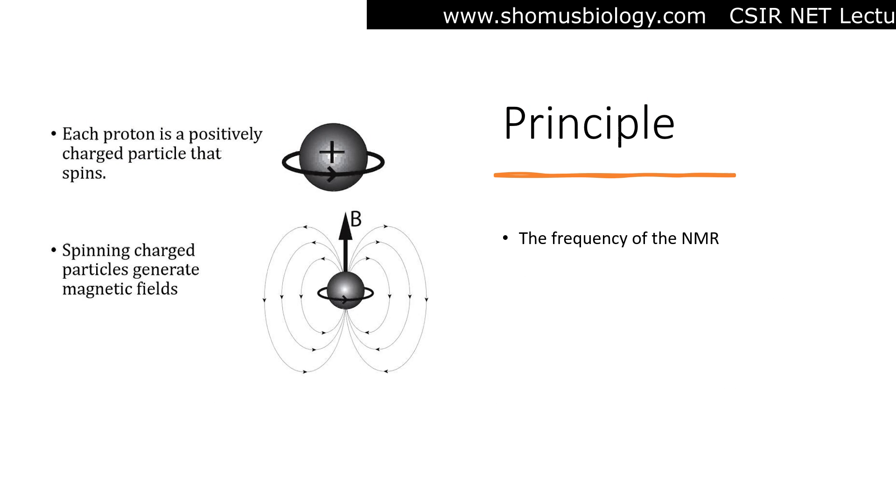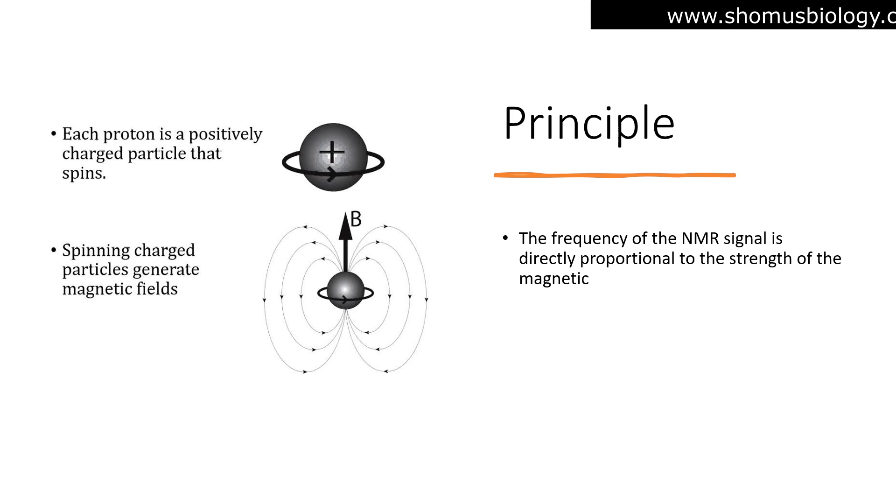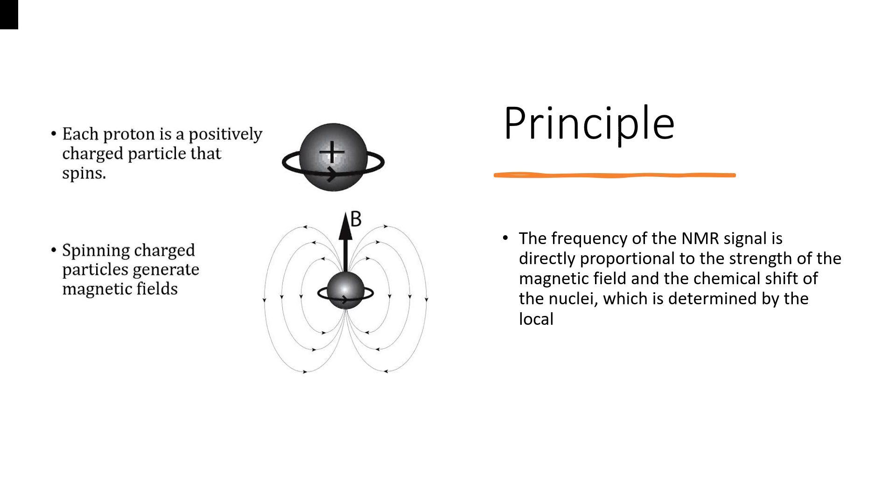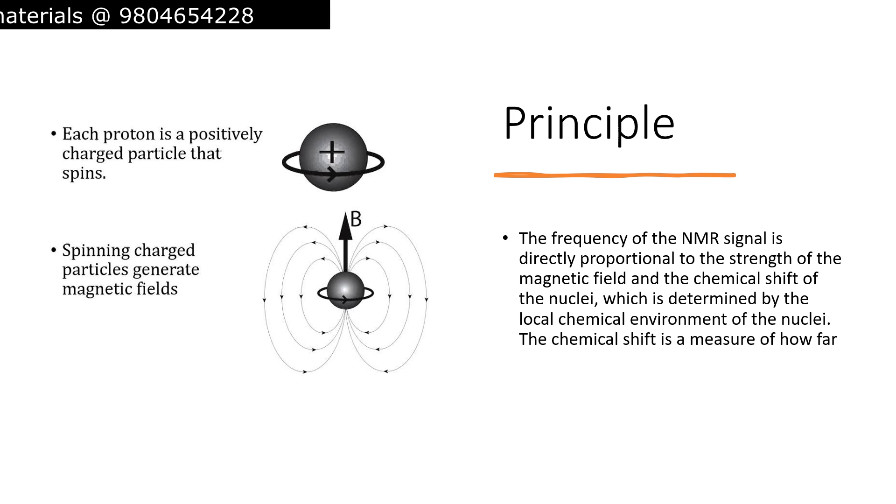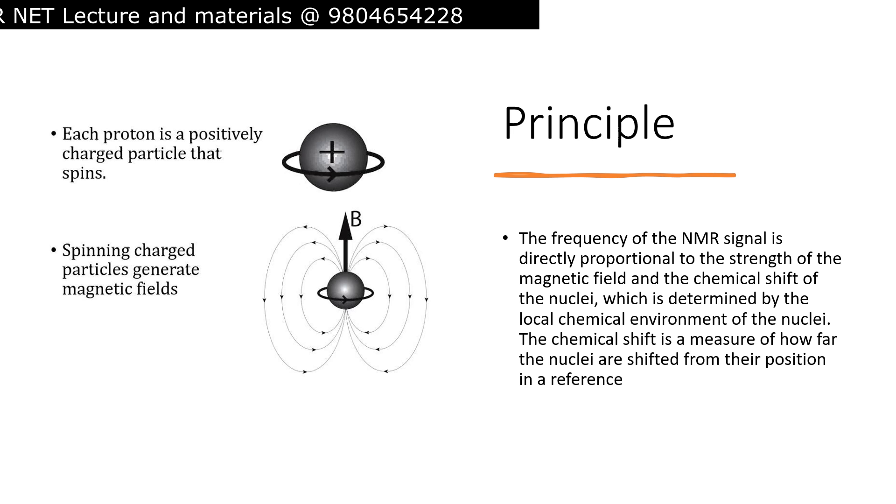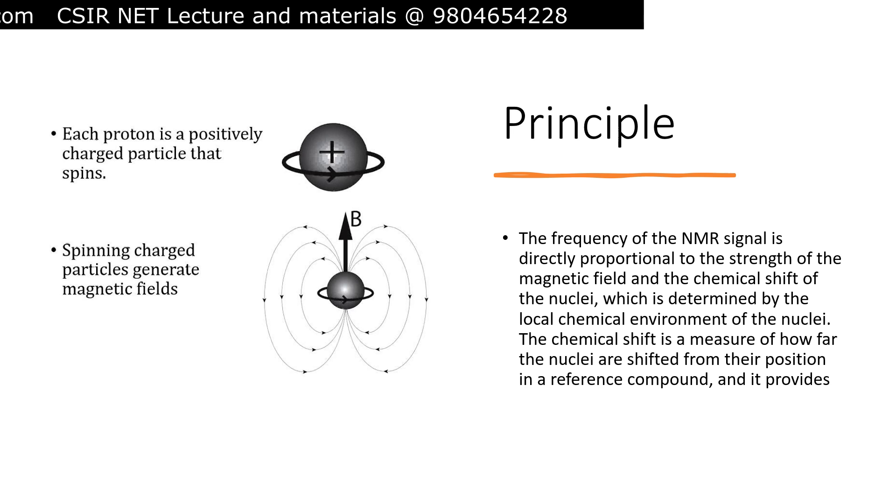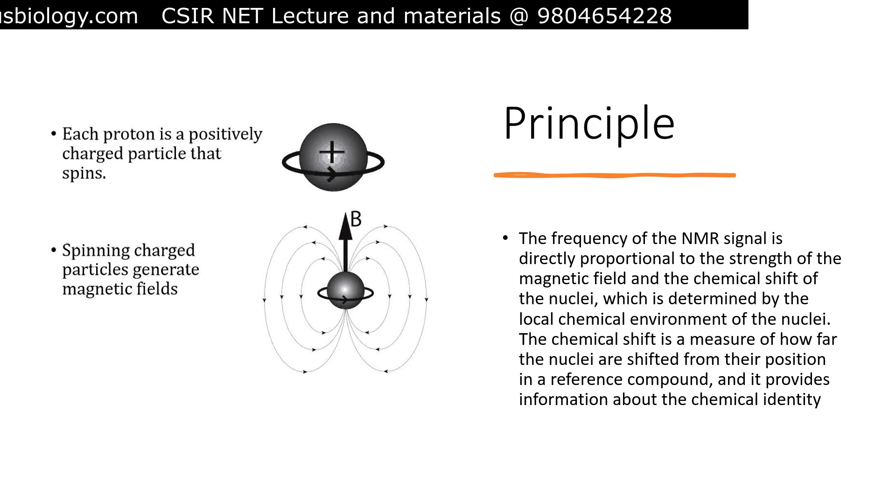The frequency of the NMR signal is directly proportional to the strength of the magnetic field and the chemical shift of the nuclei, which is determined by the local chemical environment of the nuclei. The chemical shift is a measure of how far the nuclei are shifted from their position in a reference compound and it provides information about the chemical identity of the nuclei and their environment.